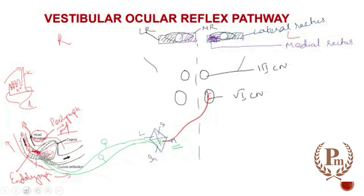To summarize the pathway so far: the receptors are present in the semicircular canals. When we think of head rotation, it is the semicircular canal that gets stimulated. The receptors are the cristae, which have hair cells responding to movement of the endolymph. From there, information is carried by the afferent fibers — the vestibulocochlear nerve, the eighth cranial nerve — and it goes to the vestibular nucleus.